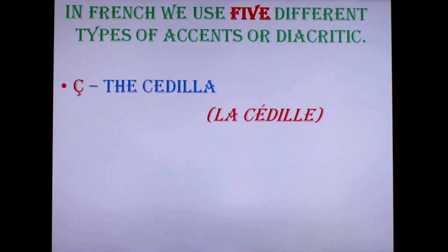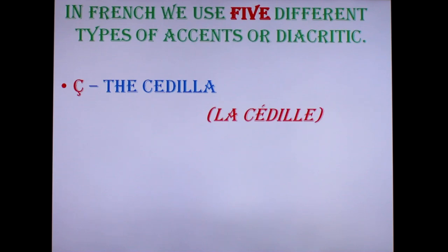A common word where you can see the cédille in use is 'garçon'. In this word C comes before O and needs to be sounded as S, so you put a cédille. 'Garçon' in French means either a boy or a waiter. It is also used in the word 'français', where the C also comes before the letter A and must be sounded as S.